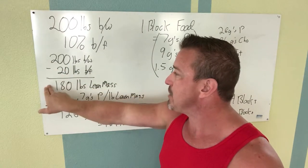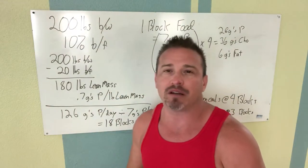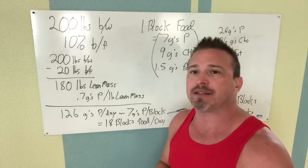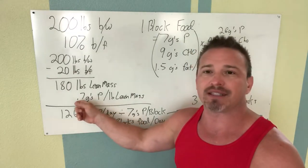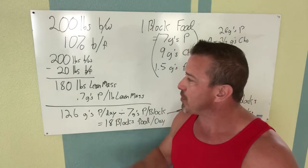So 200 pounds of body weight minus the 20 pounds of body fat equals 180 pounds of lean body mass. Really important number here because the number of grams of protein for weight loss is going to be about 0.7 grams of protein.